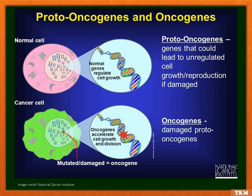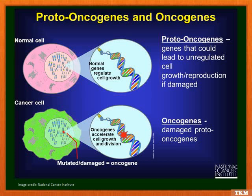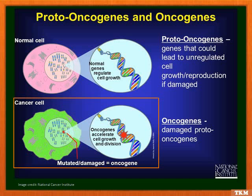To understand this, we need to understand the concept of proto-oncogenes and oncogenes. Proto-oncogenes are genes that could lead to unregulated or uncontrolled cell growth if they get damaged. Oncogenes are the damaged forms of these genes, and that is why they cause uncontrolled cell growth.